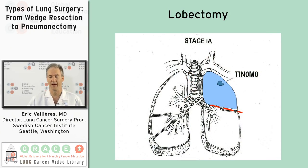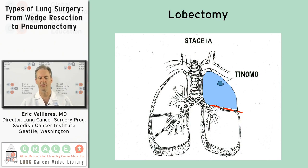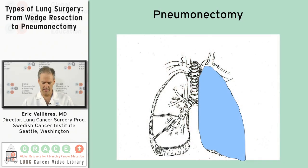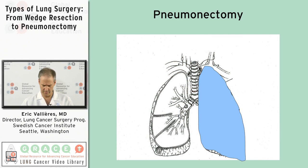Beyond the segmentectomies, the next amount of lung we consider removing is a lobectomy, meaning one lobe. There are five of those — three on the right, two on the left. On the right side, sometimes we will remove two lobes, the middle lobe and either the upper lobe or the lower lobe, and that is called a bilobectomy. If we remove the entire lung, that is called a pneumonectomy, and that's the highest amount of lung that you could remove on one side.